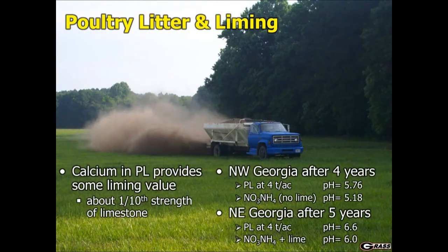In this section, I'd like to visit with you about the pros and cons of poultry litter. One of the real advantages of using poultry litter is that it has a liming effect. It has about one tenth the strength of limestone, so we can get a pretty substantial improvement in soil pH over the years when we use poultry litter at economically relevant rates.